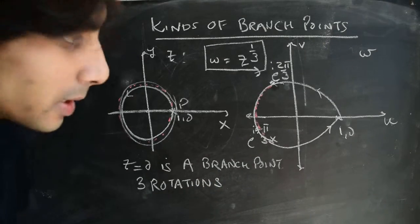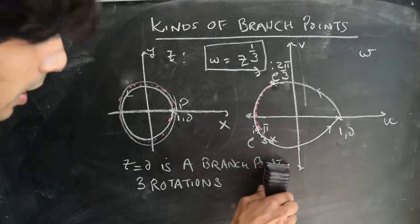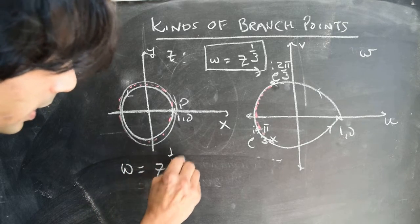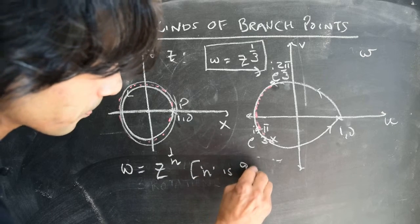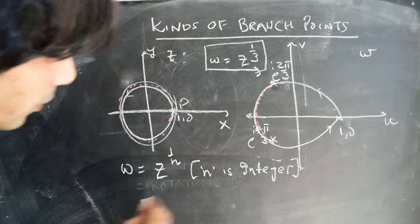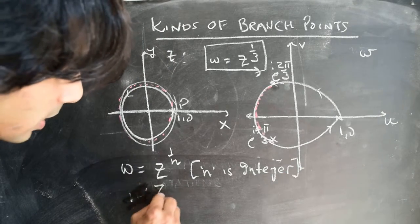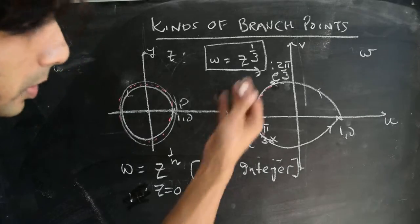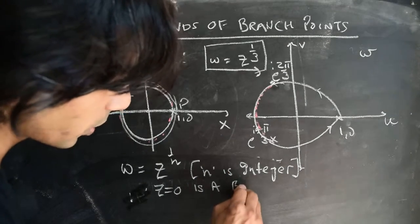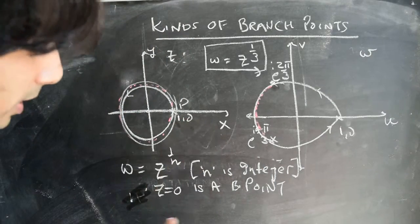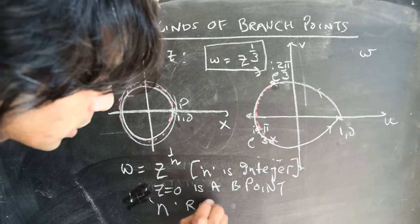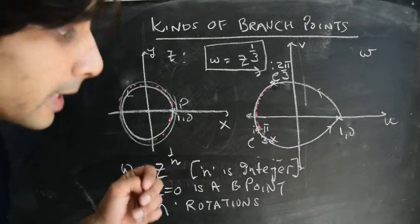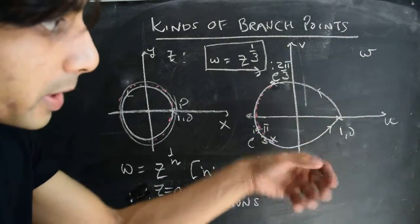We can generalize these ideas to such mappings and argue that for a general mapping of the form w equals z to the power of 1/n, where n is an integer, you will have to make n rotations. For such mappings, z equal to 0 is a branch point — this follows by the same logic as with z to the power of 1/3. And the number of rotations you have to make is n rotations to come back at the point where you began in the w-plane.